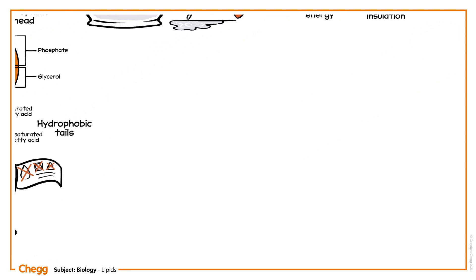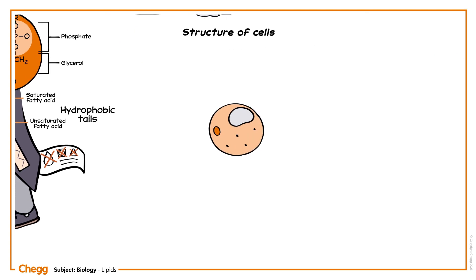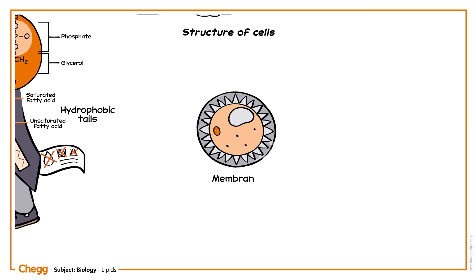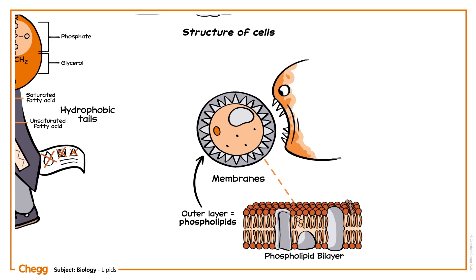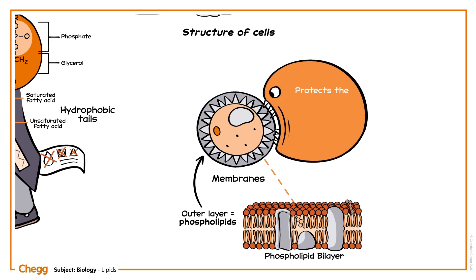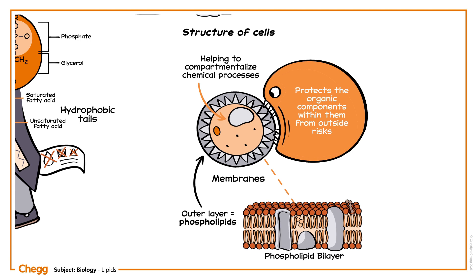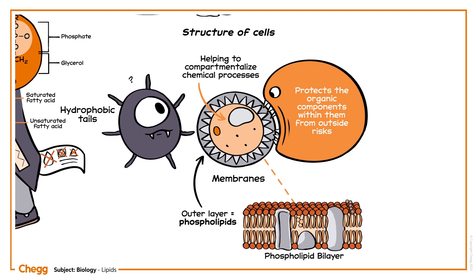Other lipids yet form the structure of cells. Different cells and organelles have a thin membrane consisting of two layers of phospholipid molecules, known as a phospholipid bilayer. Membranes generally act to isolate cells and sections of cells from their surroundings, which helps to protect the organic components within them from outside risks, while also helping to compartmentalize chemical processes. Without this compartmentalizing, chemical processes could not happen in the controlled way that they do, and life as we know it wouldn't be possible.